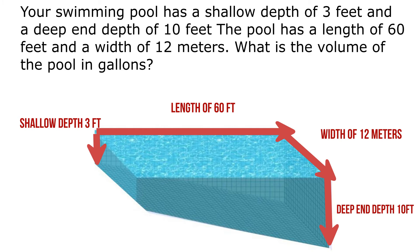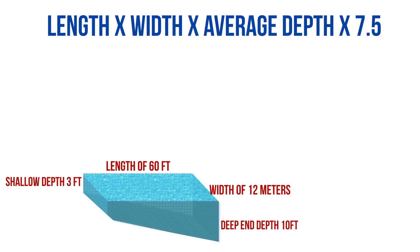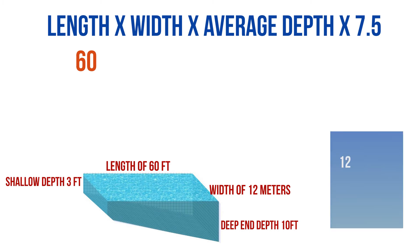What we need to do here is write our volume formula: length times width times average depth times 7.5. Our length is 60 feet, so we'll put that in. Our width is 12 meters, but we want both length and width to be in feet, so we need to convert that 12 meters.